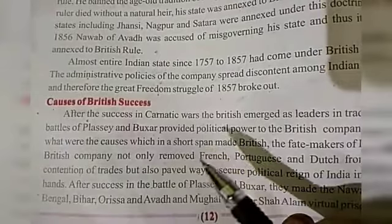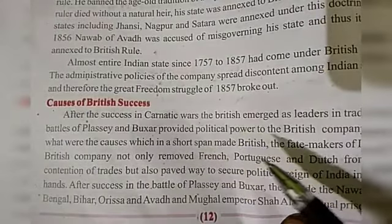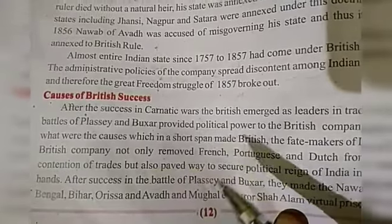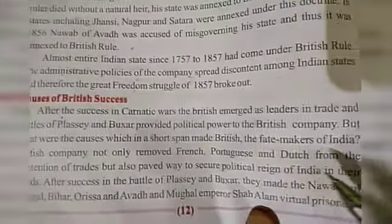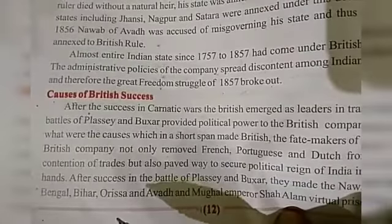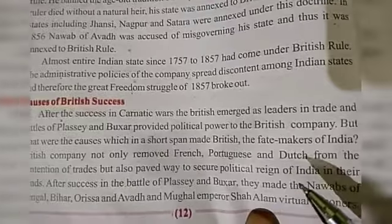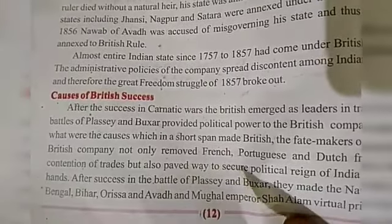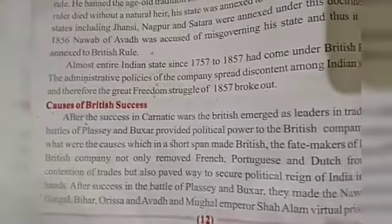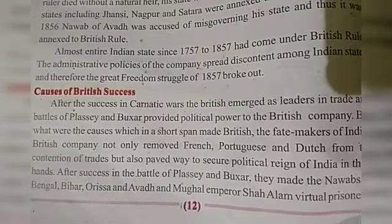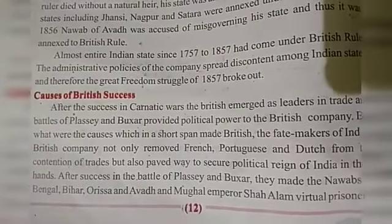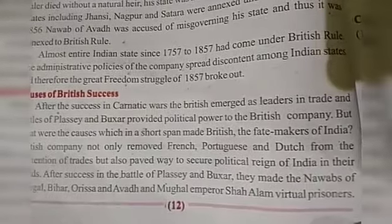But what were the causes which in a short span made the British the fate-makers of India? The British company not only removed the French, Portuguese and Dutch from the contention of trade, but also paved the way to secure political reign of India in their hands. After success in the battles of Plassey and Buxar, they made the Nawabs of Bengal, Bihar, Odisha, and Awadh, and Mughal emperor Shah Alam, virtual prisoners.